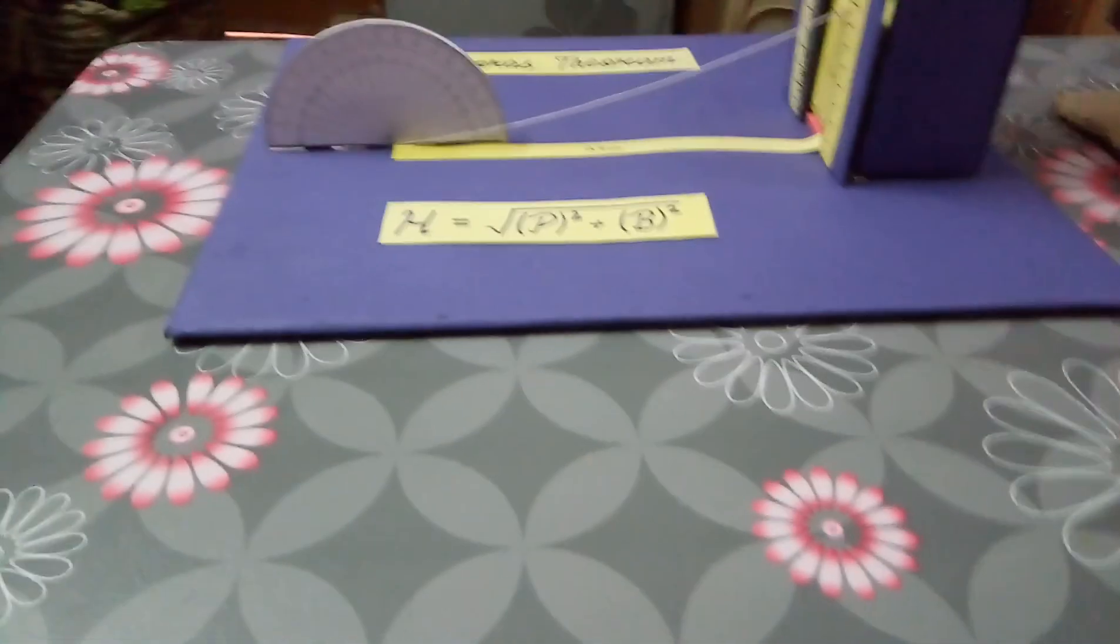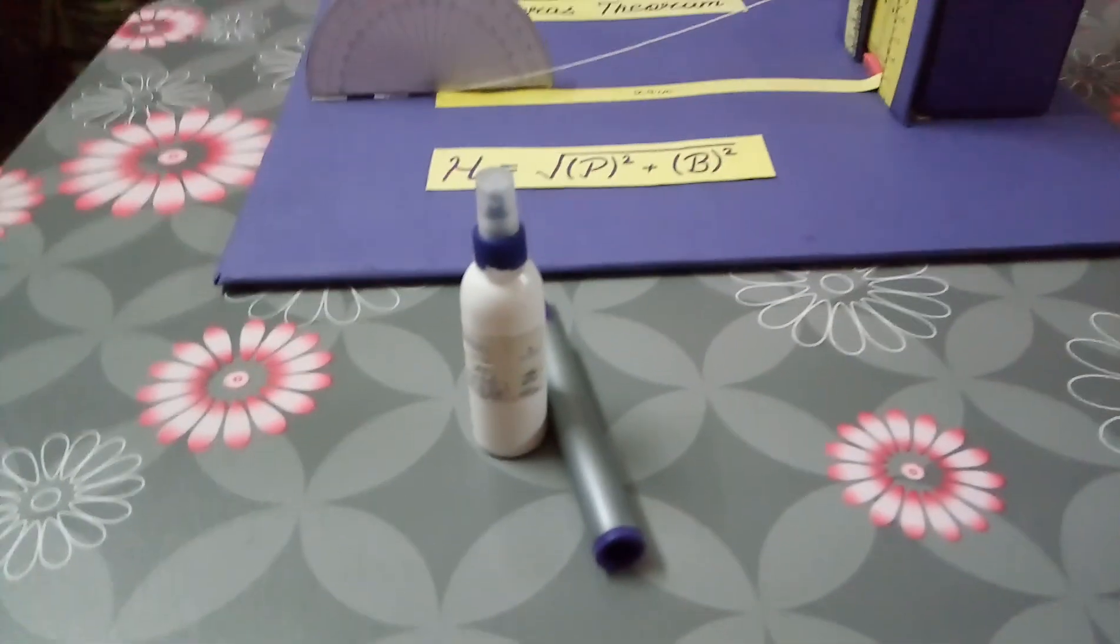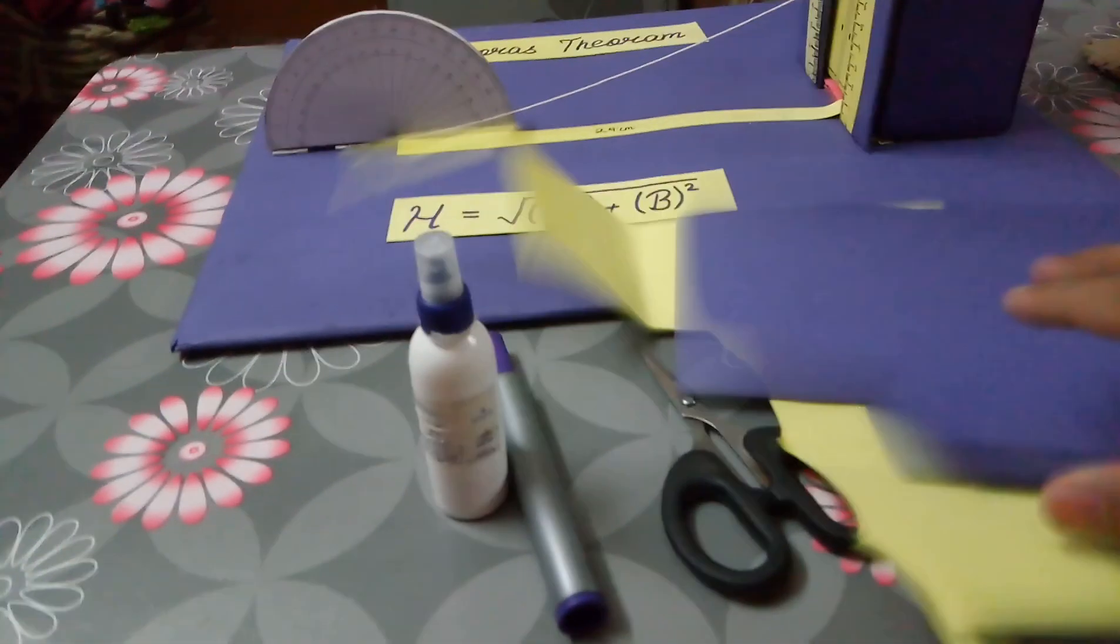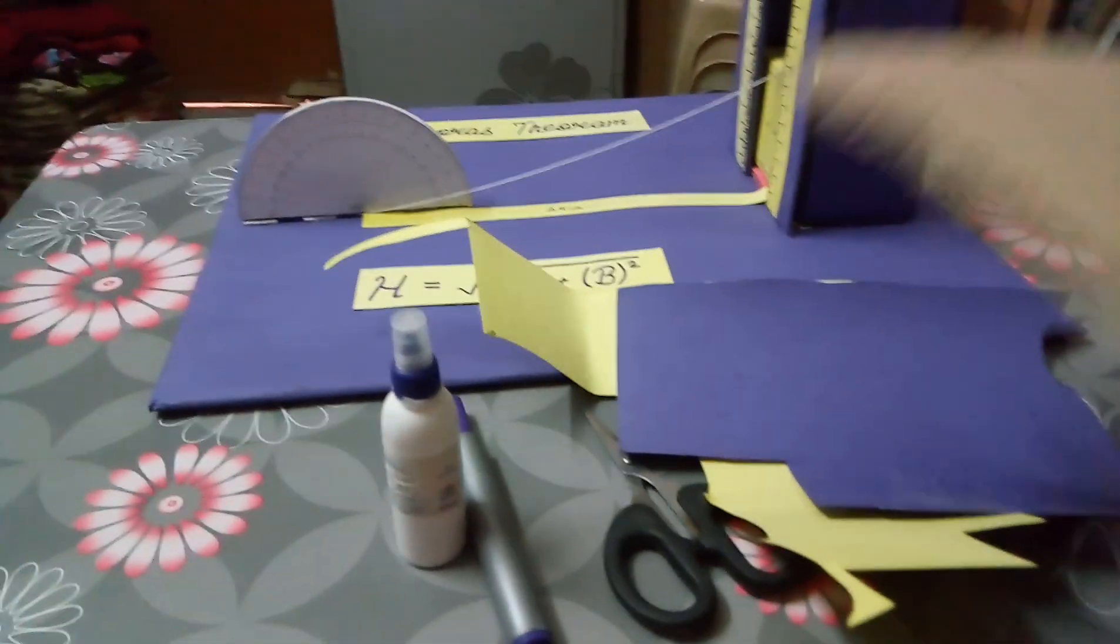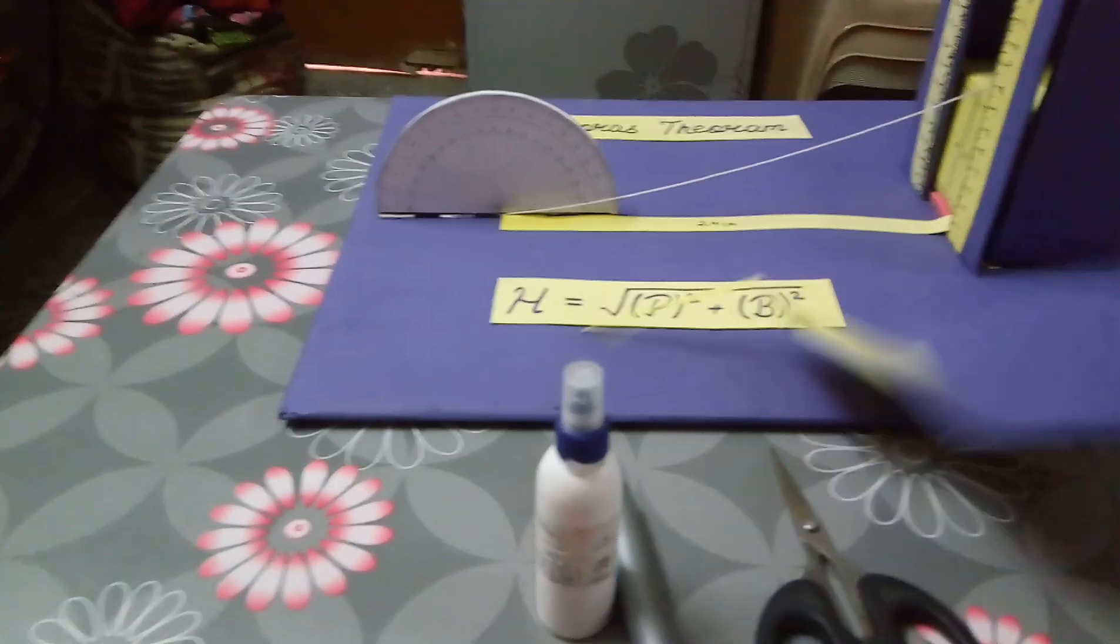First of all, you just need a glue, a marker, a scissor, two chart papers of different colors, and then a mount board. So that's all you need, guys.